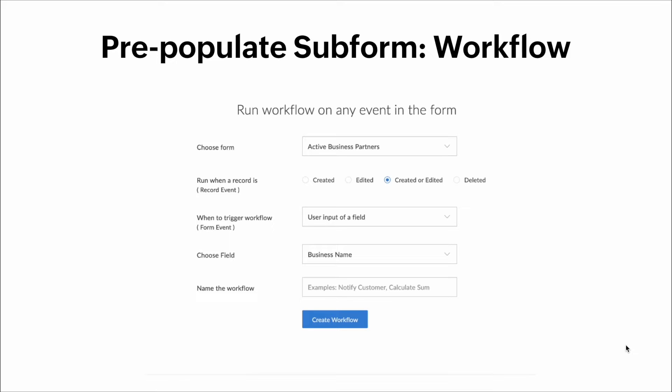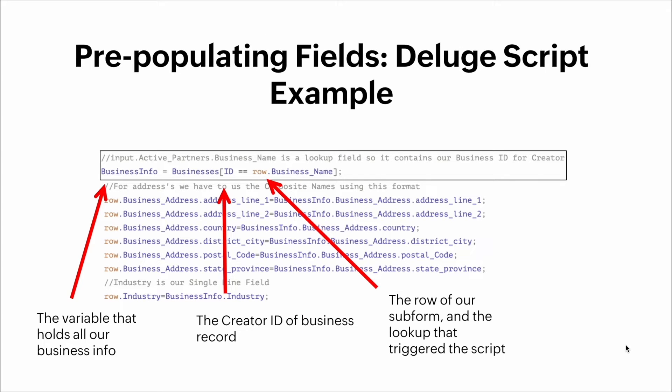Here's how we create the workflow: we choose the form, then we select when we want the workflow to run — in this case when a record is created or edited. We tell it to trigger when the user input of a field changes, and in this case that field name is the business name.